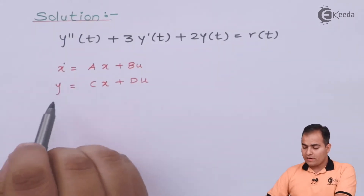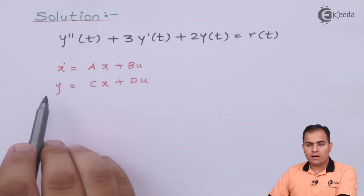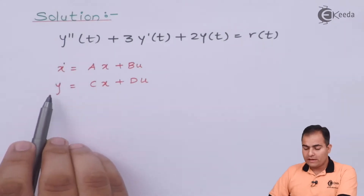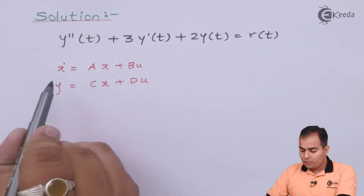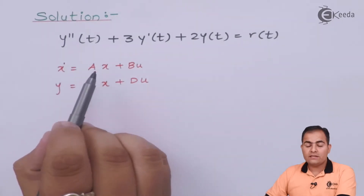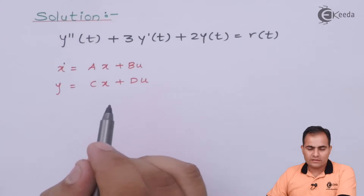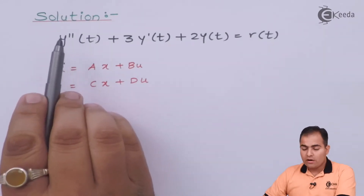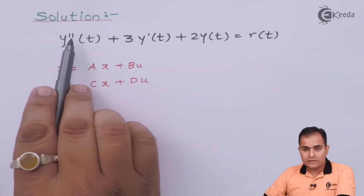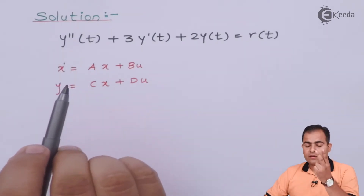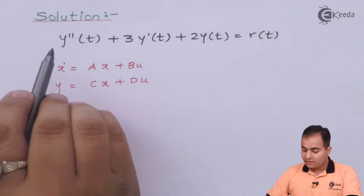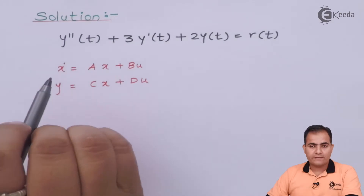The standard state variable model has two equations: the input state equation and the output state equation. In x-dot, x-dot and x are the state variables and u is the input. Here the highest power of differentiation is two, meaning we have a second-order differential equation, so we will use two state variables.